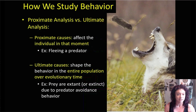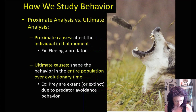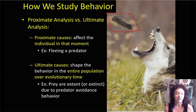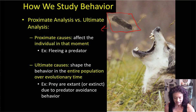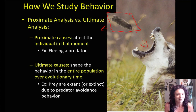Proximate analysis and ultimate analysis look at the causes of a behavior from two different perspectives. Proximate causes affect the individual in that very moment. For example, this vole is fleeing a wolf located off screen. Why would that vole be fleeing? It doesn't want to get eaten. The reason it leapt away was to avoid dying. So what's the immediate proximate cause? Survival — self-preservation. That's the proximate cause of this fleeing behavior.